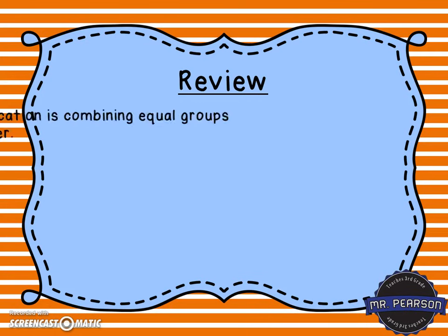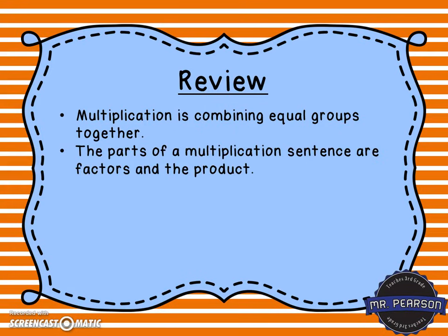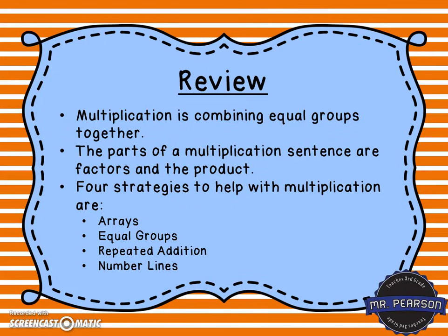Let's review. Multiplication is combining equal groups together. The parts of a multiplication sentence are factors and the product — you usually have two factors and then the product, which is the answer. And there are four strategies used to help with multiplication: arrays, equal groups, repeated addition, and number lines.